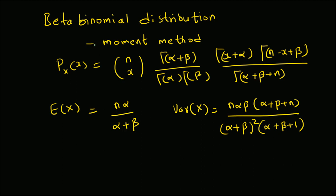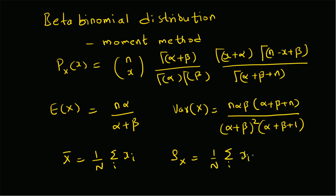From sample values — that is from N data points, N samples — the sample mean x̄ is (1/N)·Σxᵢ, and the sample variance is (1/N)·Σ(xᵢ − x̄)².